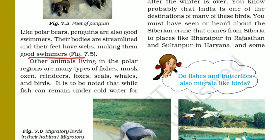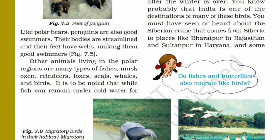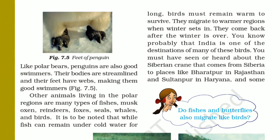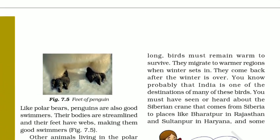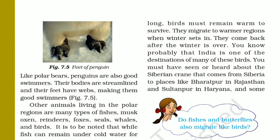Other animals that live in the polar region besides penguins and polar bears include many types of fish, reindeers, foxes, whales, and some kinds of birds. There are some kinds of birds which used to migrate from that particular place, because unlike the other animals, birds need a warmer condition to survive.